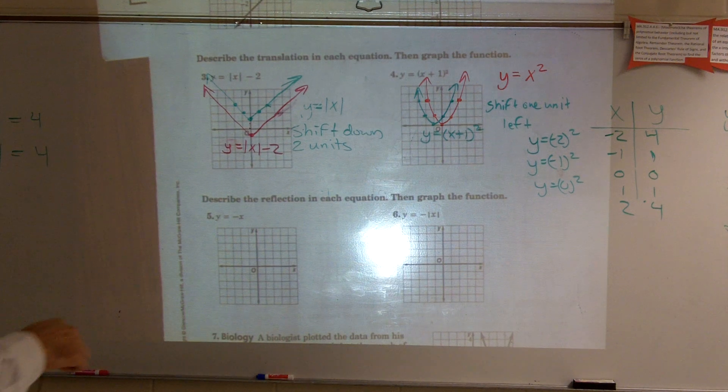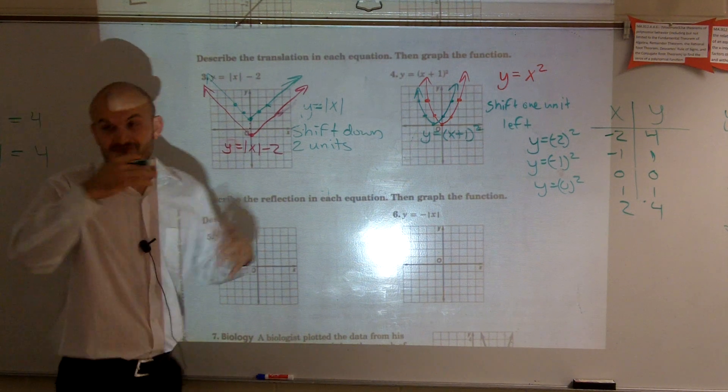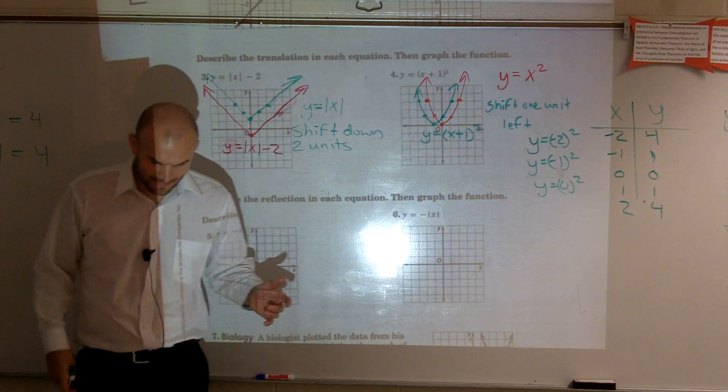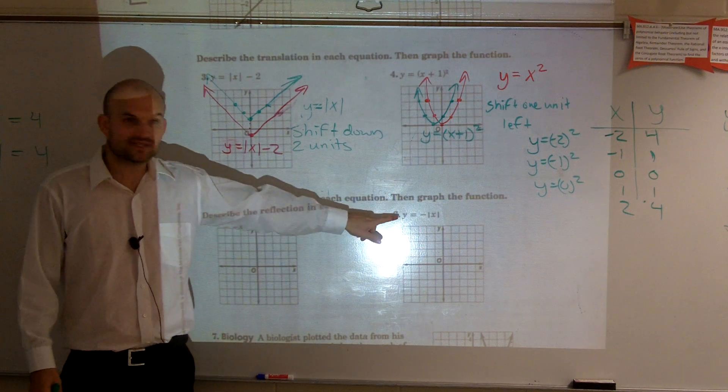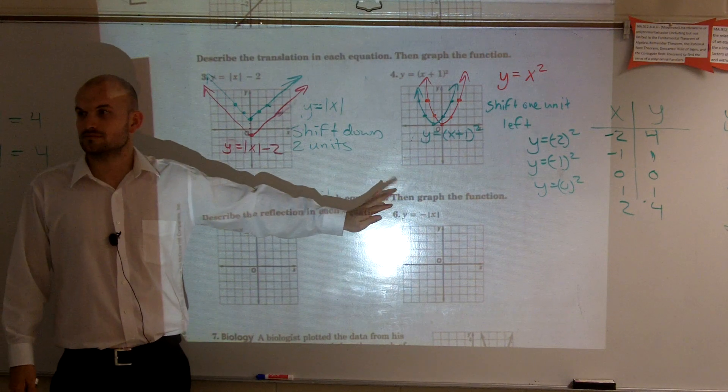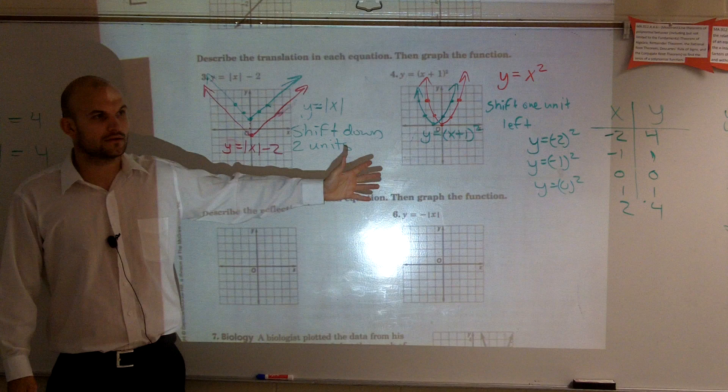Alright, so to do the reflection, let's follow the process again. First, what is our parent graph for number six? What's our parent graph? You only have four choices. What is the parent graph?